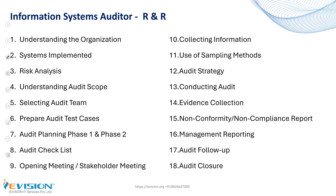What is the role of an information systems auditor? The auditor should have a good understanding about the organization and its implemented systems, perform risk analysis — high, medium, low — understand the audit scope, select the audit theme, and prepare audit test cases. Audit is conducted in two phases: phase one is document verification and phase two is applicability testing. The auditor should also be able to perform the audit checklist, ensuring no activities are missed during the audit.